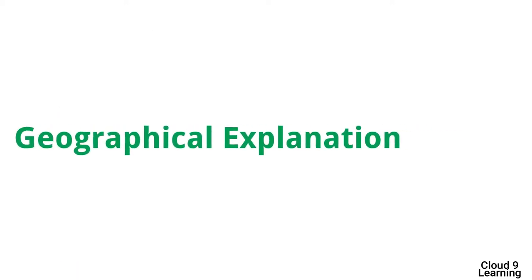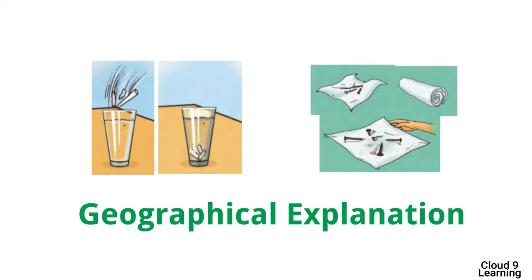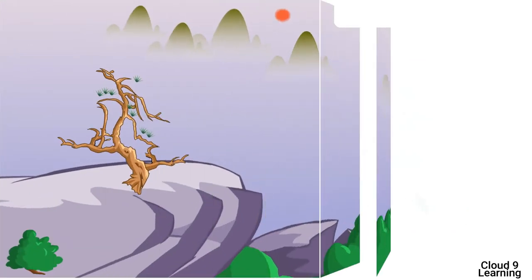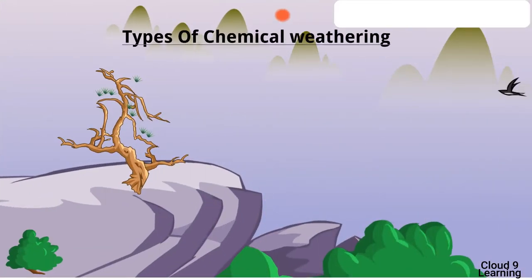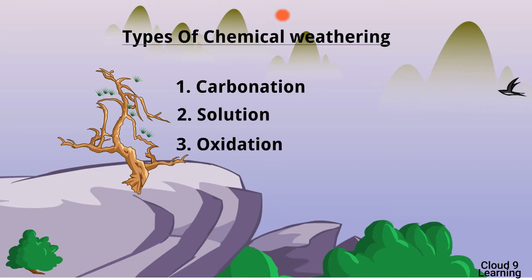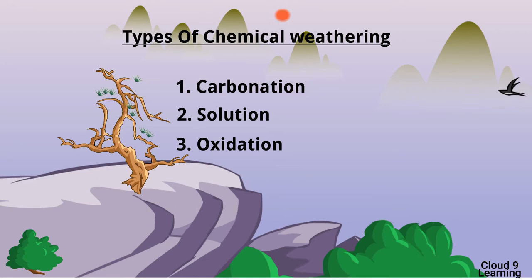From both experiments, we come to know that water plays an important role in chemical weathering. Rock is a mixture of many minerals, and water is a universal solvent — many things get easily dissolved in it. In areas that receive heavy rainfall, chemical weathering takes place by five ways: carbonation, solution, oxidation, hydrolysis, and hydration. In this chapter, we will study the first three.